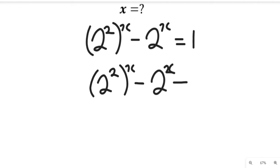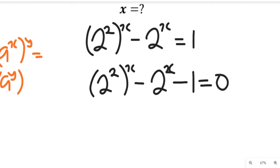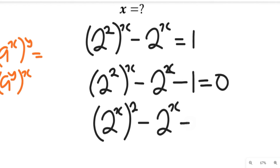Remember the law of indices: when we have a to the power of x multiplied by y, this can also be equal to a to the power of y multiplied by x. Applying that here, this will become 2 to the power of 2x, minus 2 to the power of x, minus 1, equal to 0.